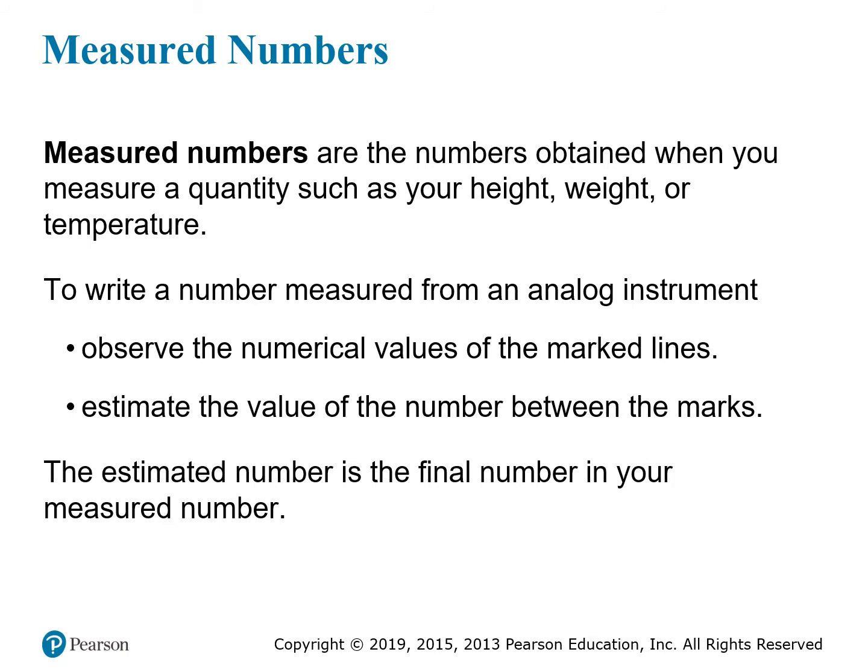Other instruments are digital, which usually means the property being observed produces some electrical response in the instrument, which is then used to compute the measurement. A digital weight scale is a good example of this kind of instrument. For a digital instrument, the device will already be designed and calibrated to display the measurement for you with the correct precision. You can just write down all the numbers you see on the digital display.